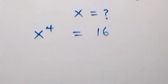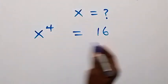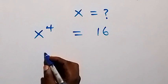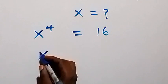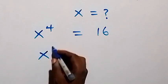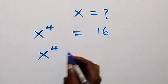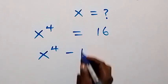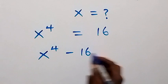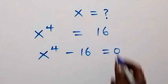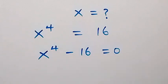Then let's take 16 here. We have x raised to power 4 minus 16 equals zero.